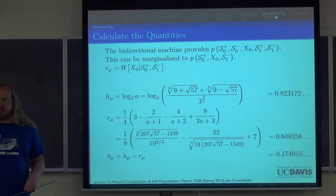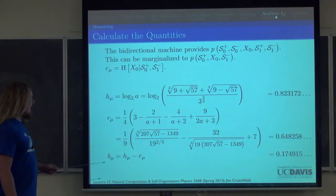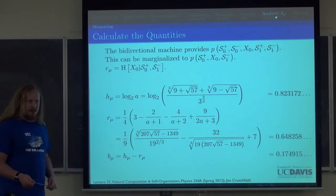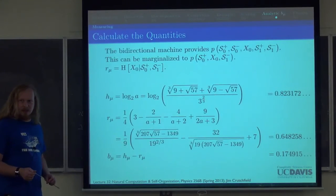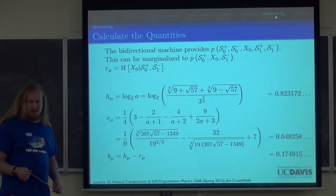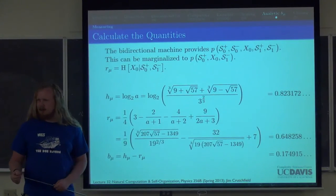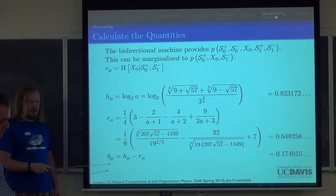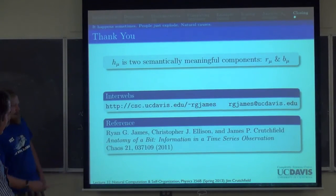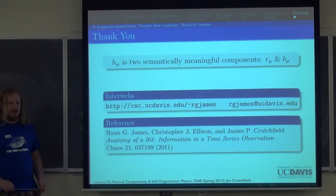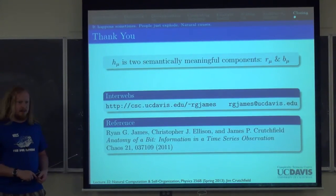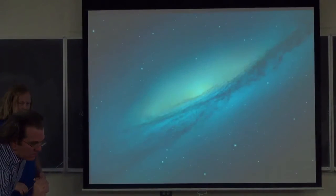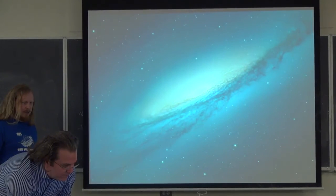These methods are built into Campy: `m.residual_entropy_rate()` gives r_μ and `m.predictive_information_rate()` gives b_μ. You won't be asked to calculate these quantities by hand on the homework since it's rather difficult and time-consuming. There's also a paper you can read that talks about how to calculate these measures.